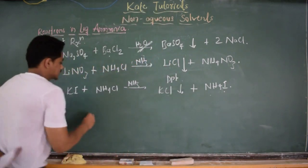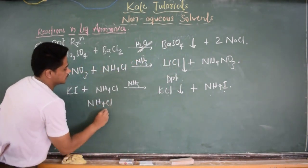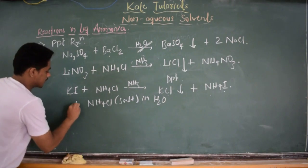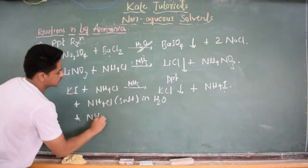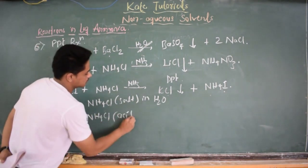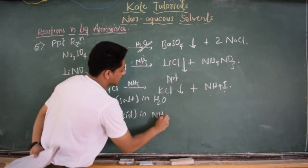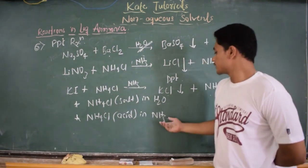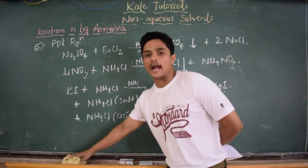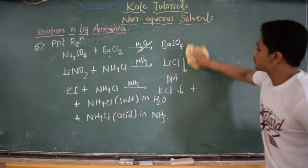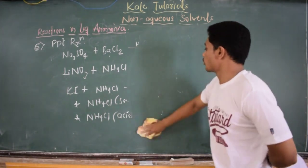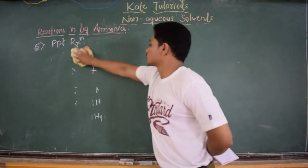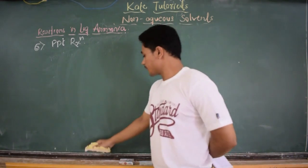One thing is clear: NH4Cl is a salt in water, but the same NH4Cl is an acid in liquid ammonia. These things you should remember — how these compounds act differently based on the solvent. The down arrow symbol represents precipitation — that the compound settles due to gravitational force.